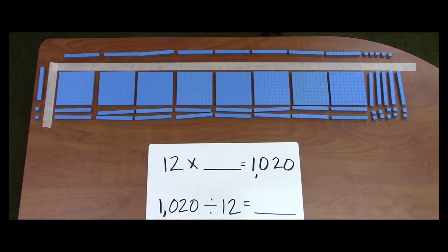Across the top is my missing factor of 85. Each girl will need to sell 85 tickets to reach their goal.